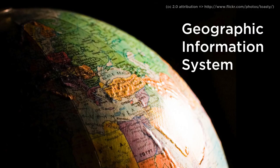Geographic Information Systems. Geographic Information System is a term first used in 1968 by Roger Tomlinson in a paper titled 'A Geographic Information System for Regional Planning.' The Geographic Information System also goes by the abbreviation GIS. Wikipedia defines a GIS system as a system designed to capture, store, manipulate, analyze, manage, and present any and all types of geographical data.